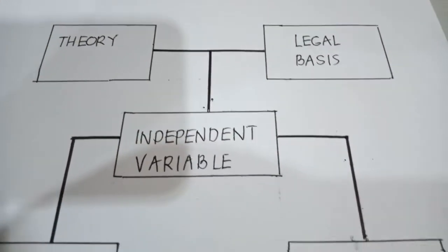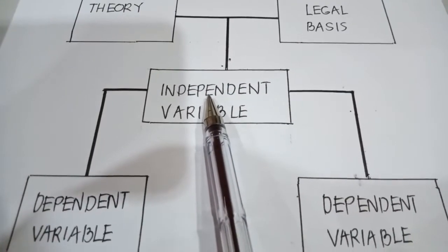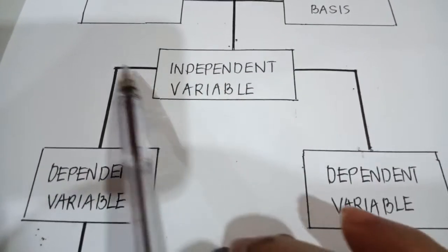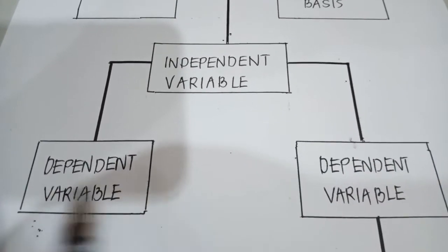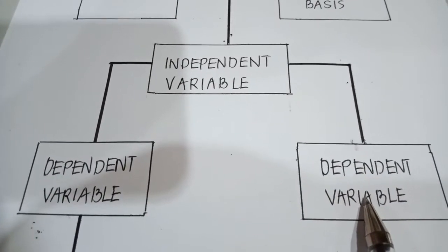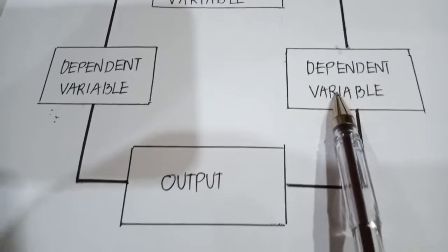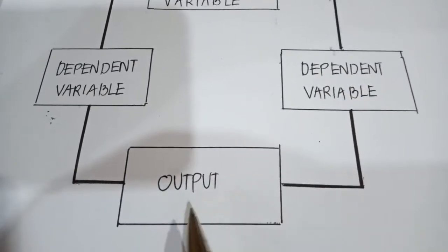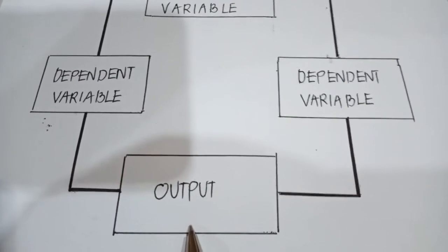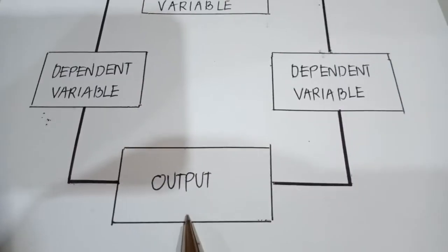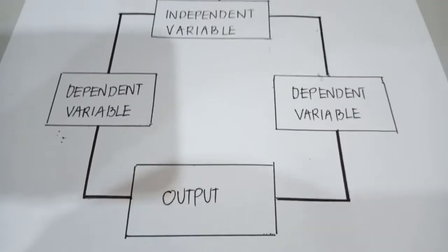Below the theory and related readings will be the discussion of your independent variable. Connected to your independent variable will be the discussions of your dependent variables — in case you have two dependent variables. And finally, connected to that would be your output of the study — defining what your goal is and what you want to achieve.